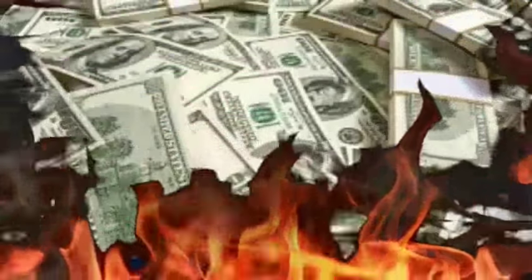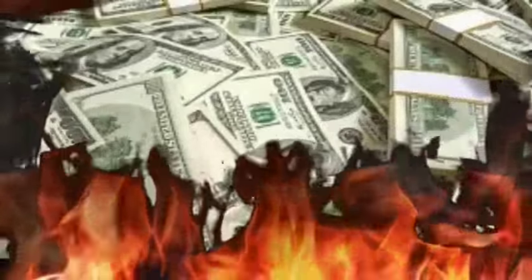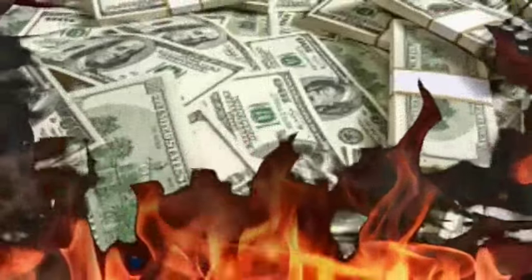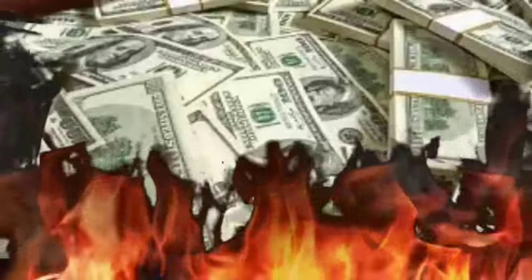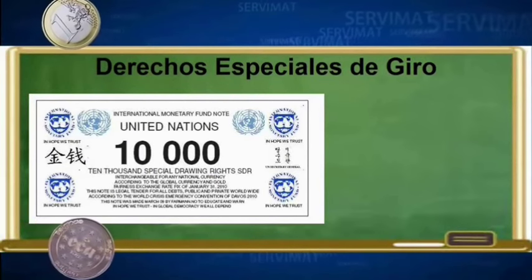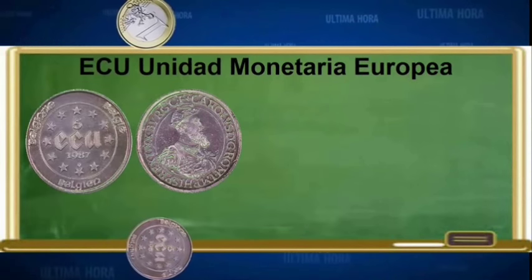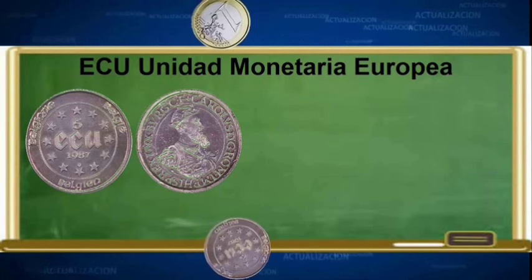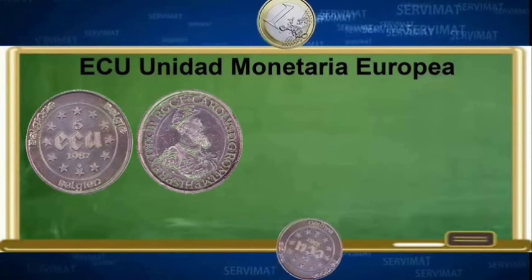Como todos ustedes saben, se ha especulado mucho sobre el día en que el dólar pierda su estatus de moneda de reserva mundial. En esta ocasión, la élite financiera ha creado un intermediario para poder crear una única moneda internacional y con esto darle el tiro de gracia al dólar estadounidense. Este intermediario se llama derechos especiales de giro en español y funciona de manera similar al ECU, que fue la unidad monetaria europea previa al surgimiento del euro. El ECU fue también una canasta de divisas cuyo valor estaba en función del peso de cada economía en la eurozona.